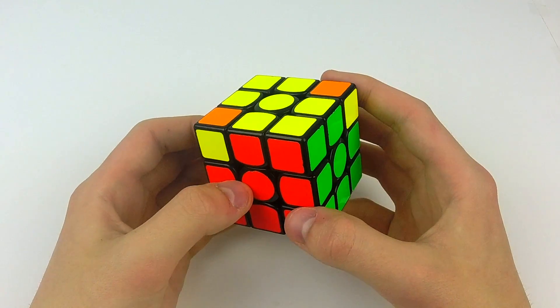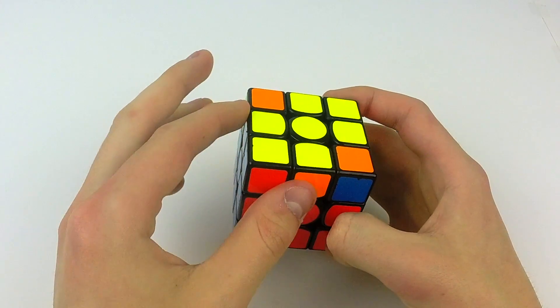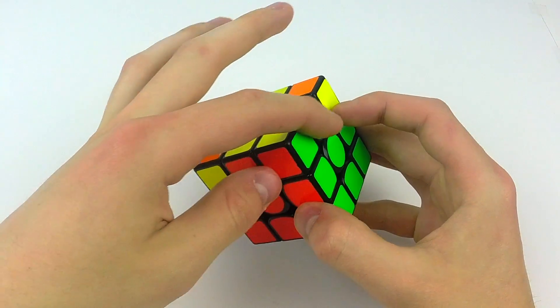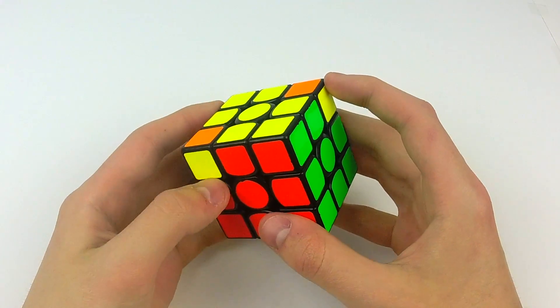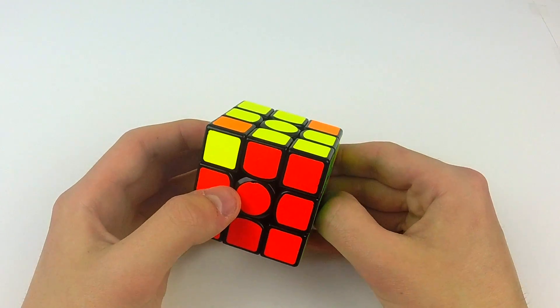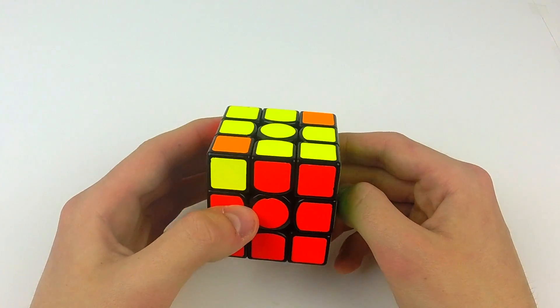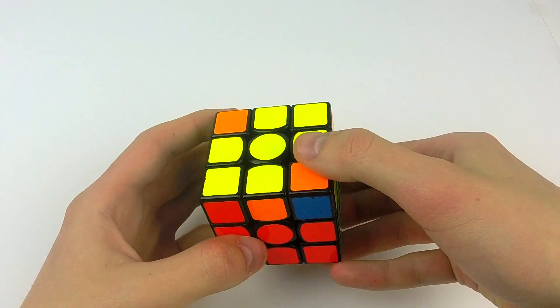And here's a little bonus trick for you. Sometimes you'll have this COLL case but instead of this block being solved you'll have this block solved in the front in between the two misoriented corners. In this case you can still really easily get a PLL skip just by adding a few wide layer turns to the regular alg. So watch this.